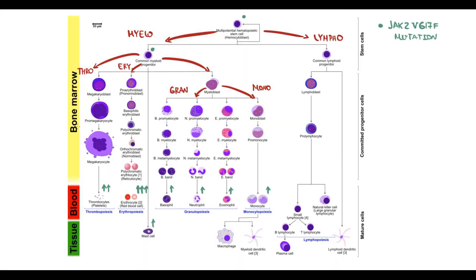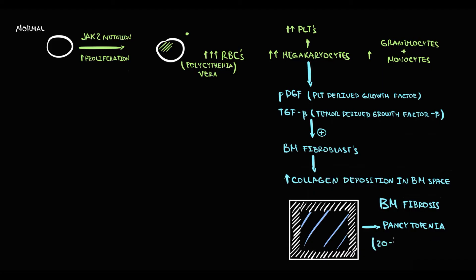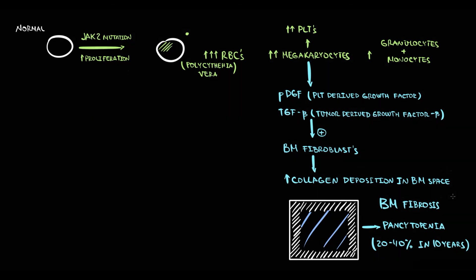Overproduction of megakaryocytes provokes an increase in secretion of fibrogenic factors that cause bone marrow fibrosis. Statistically, polycythemia progresses to bone marrow fibrosis in 20–40% of cases within 10 years, and interestingly, bone marrow fibrosis and polycythemia clinically has the same symptomatology as primary myelofibrosis.